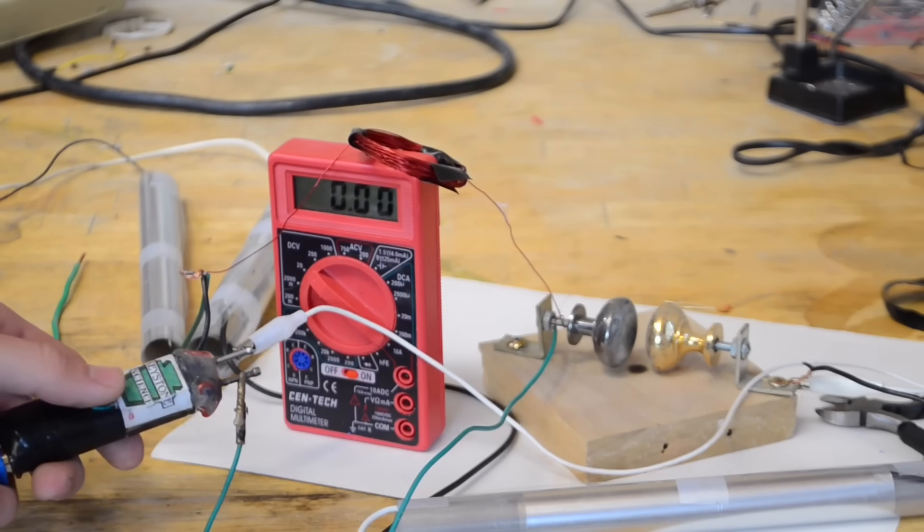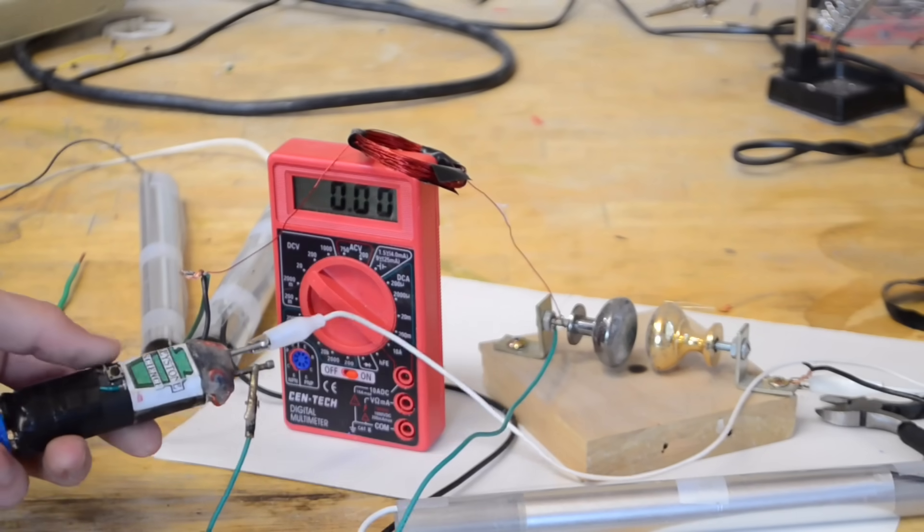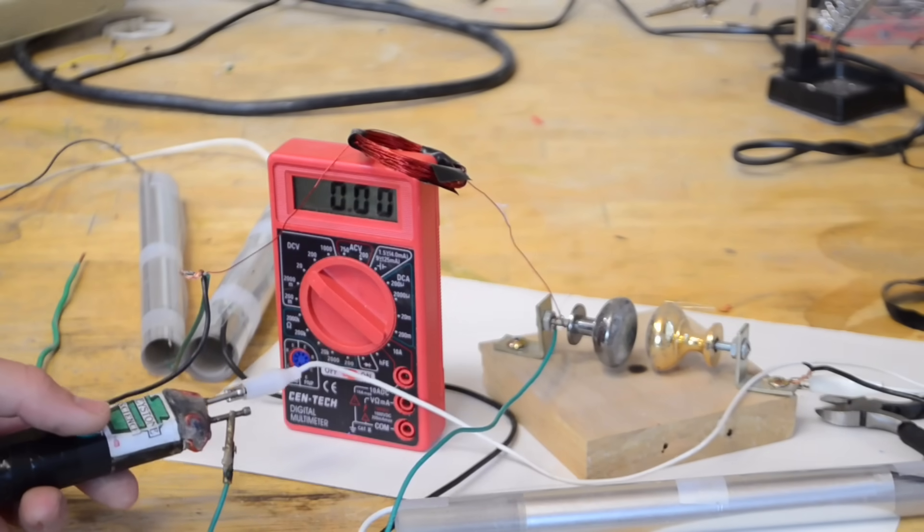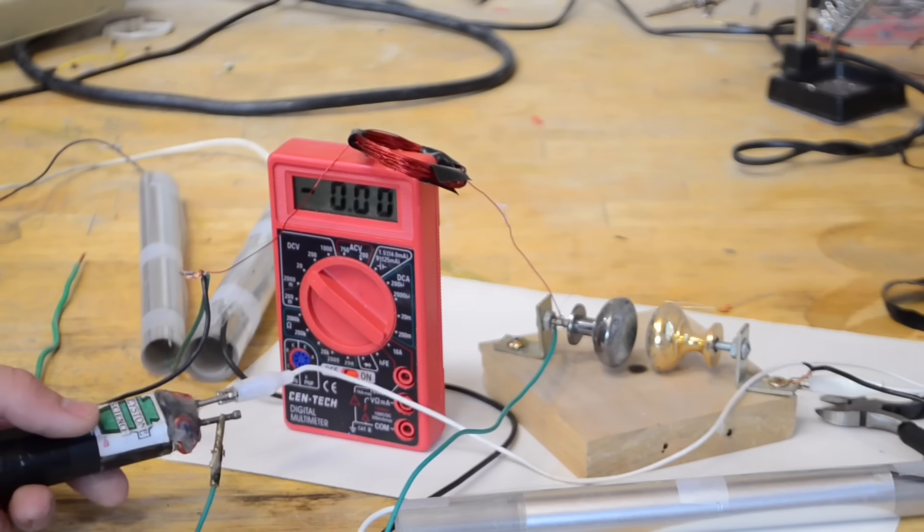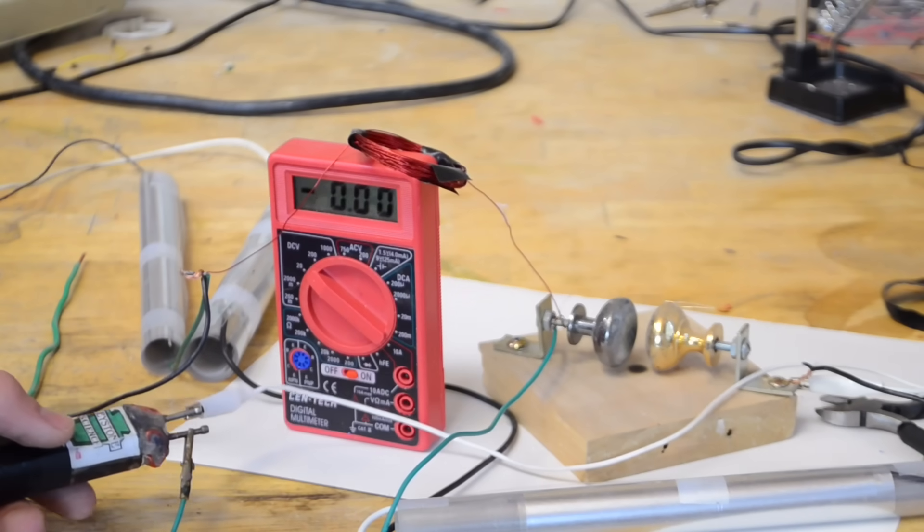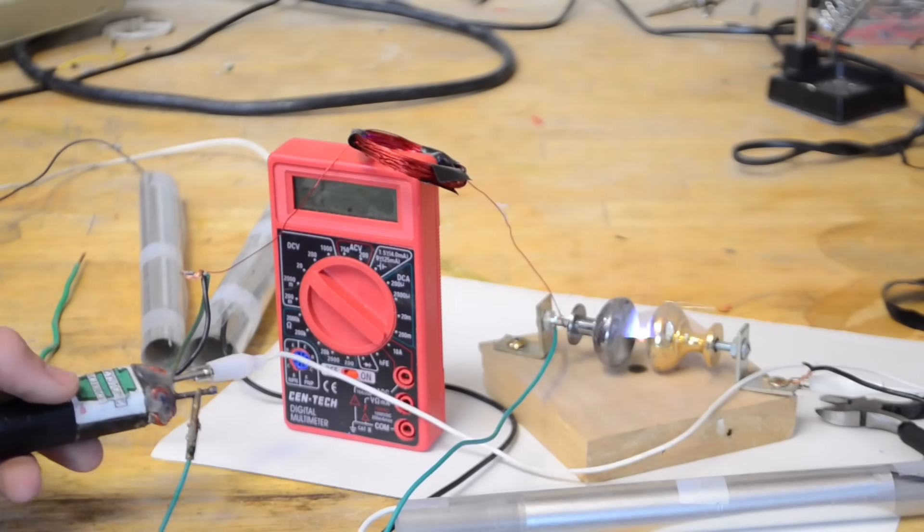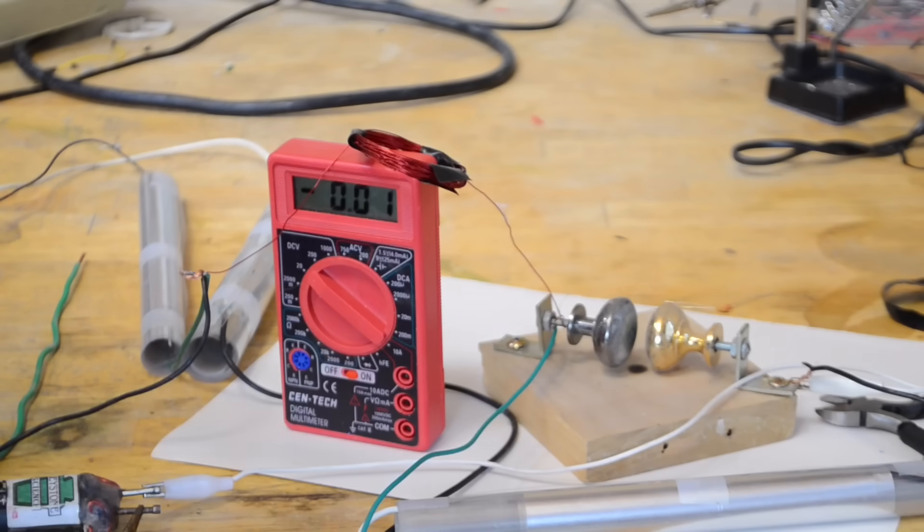Okay, so now instead of that big high voltage power supply, I've connected it up to my small pocket taser. Let's go ahead and flip it on using the same spark gap as before and see what happens with the multimeter. As you can see, the EMP is working well.